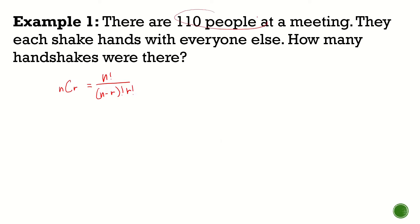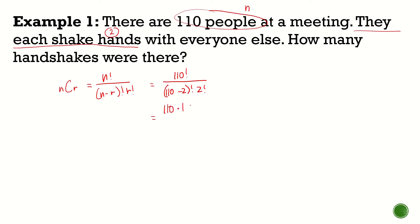Our n here is 110 people. Each shake hands — that's two — so that's our r. This becomes 110 factorial all over (110 minus 2) factorial times 2 factorial, which equals 110 times 109 times 108 factorial. I stop here because if I subtract the denominator, I get 108 factorial which I can cancel. I can cancel the 2 with 110, giving me 55. So I only need to multiply 55 and 109, which gives us 5,995.